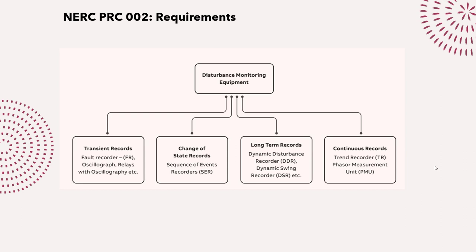Long-term records use dynamic disturbance recorders or dynamic swing recorders, with durations ranging from minutes to hours depending on the recording facility requirements. There are also continuous records such as trend recorders, phasor measurement units, or SCADA systems, which continuously record at a specified rate, have larger storage capacity, and provide wider visibility of the power system.